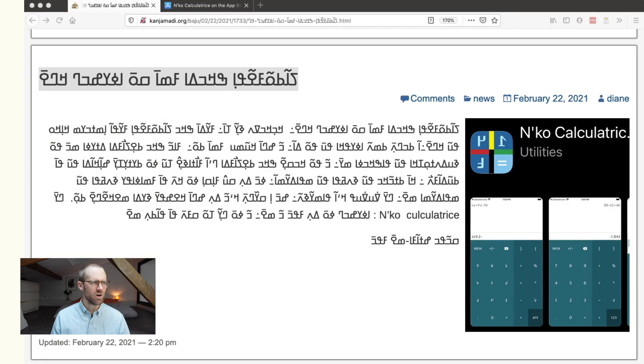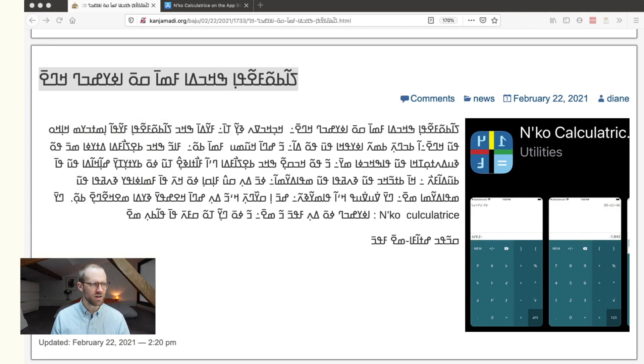You can see there's a picture over here in the article of what looks like N'ko calculatrice and it's cut off, but, and then a picture of a calculator. So, that actually is going to be a good example of what we're talking about here. It's a calculator.